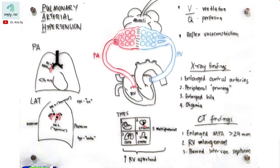In left ventricular failure, abnormal function of the left ventricle causes elevated pressures which transmit back to the left atrium, pulmonary veins, pulmonary venules, and also through the pulmonary arterioles and artery. That's what happens in left ventricular failure, which is why we call it post-capillary pulmonary arterial hypertension.